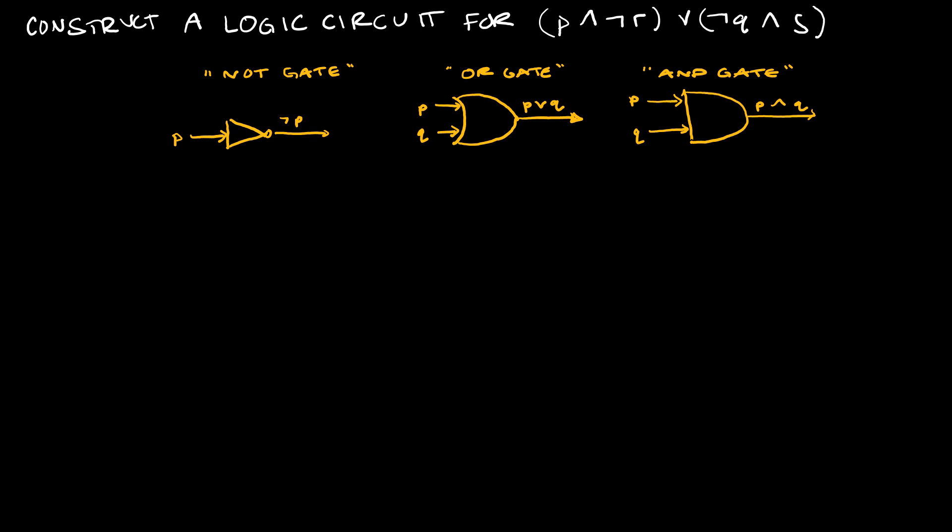So the example that we just did is pretty straightforward and nice because they do all of the work for us. They make the gates, they make the lines. All we have to do is look at the outputs. This one's going to be a little bit harder. We actually have to construct the circuit ourselves. I don't expect you to be good at drawing. I certainly am not, as you can already tell. But we're going to create a logic circuit for P and not R or not Q and S.